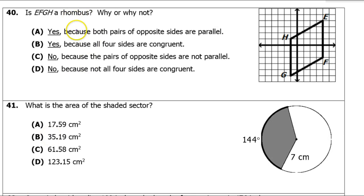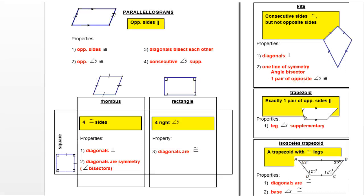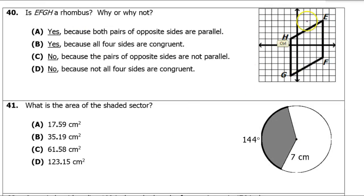Number 40: is EFGH a rhombus or not? A rhombus is a quadrilateral with four congruent sides. The vertical sides we can count by squares: counting gives 6 and 6, so those are equal.